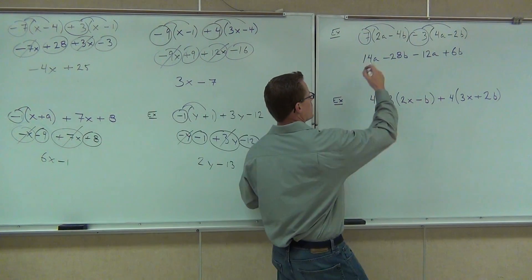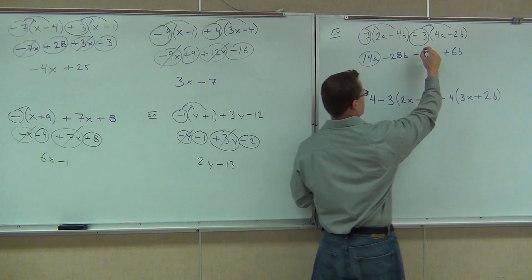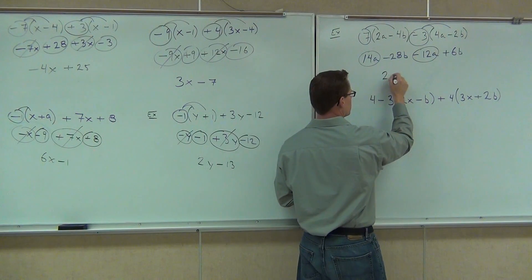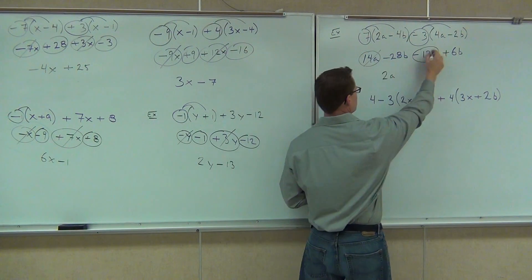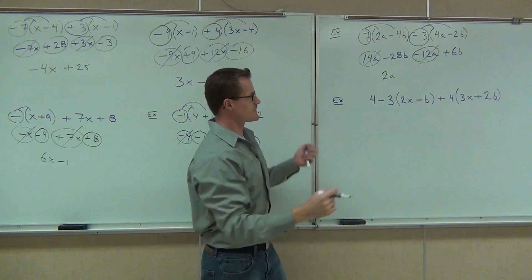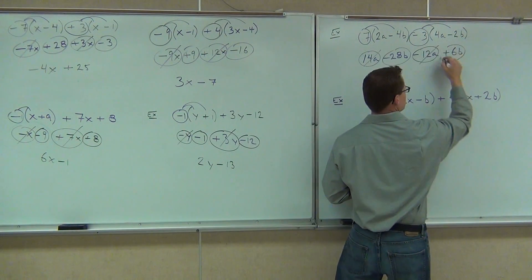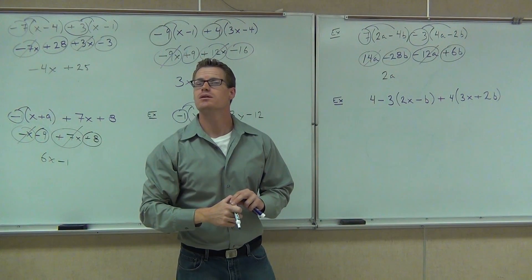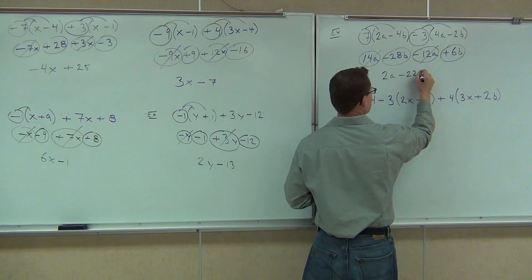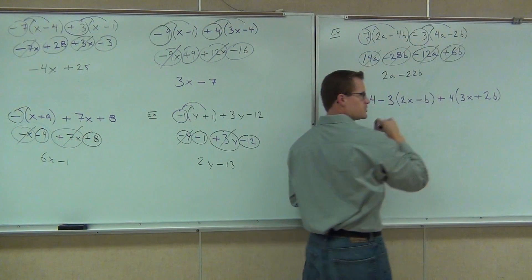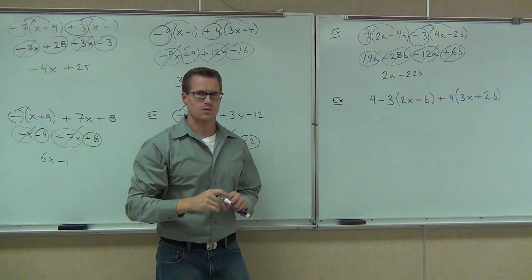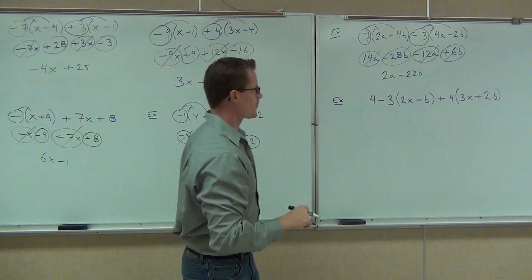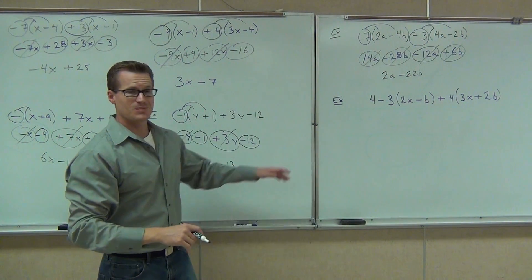So like terms time, I see the 14a, I see a minus or negative 12a, that's going to give me how much? And lastly, I see the minus 28b, I see the plus 6b, we're going to get what out of that? How much? Perfect. Did you get that too? Awesome deal. Let's try one more together, I want you to see one thing about this problem, and then I'll let you go and have a couple on your own.